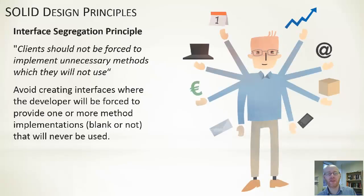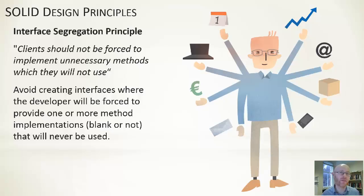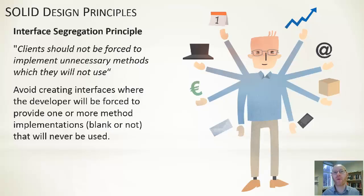The I is the Interface Segregation Principle: clients should not be forced to implement unnecessary methods which they will not use. Interfaces are a good way of abstracting and defining connections between classes, but we should avoid creating an interface that defines 15 different methods when most users only need two. If the other 13 don't make coherent sense alongside those two, we shouldn't force users to implement them. Instead, split that big interface into smaller interfaces, giving users control over the elements they want to extend or link up with.